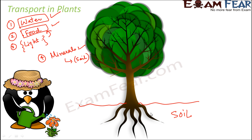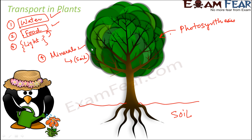The roots are in direct contact with the soil, so water and minerals from the soil are directly absorbed by the roots. If we want these minerals to reach the leaves, there has to be some transport mechanism. Similarly, food is prepared by photosynthesis in the leaves, but roots also need food — so that food needs to be transported from the leaves to all other parts of the plant.